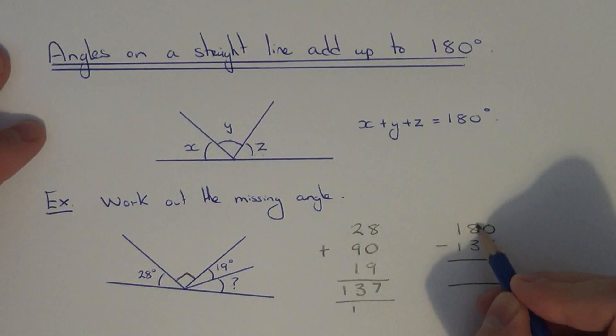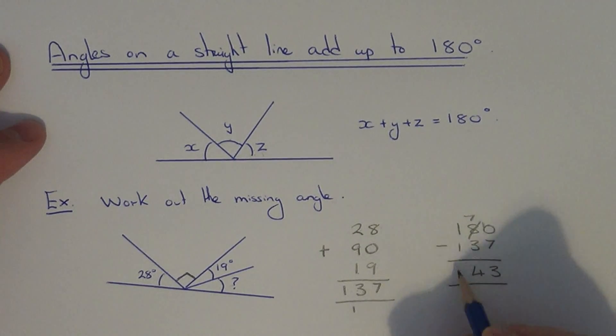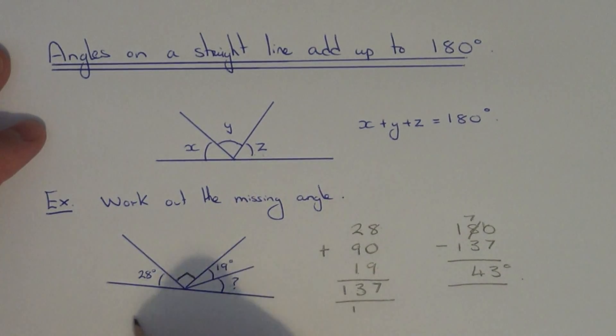0 take away 7 you can't do, so 10 take away 7 is 3, 7 take away 3 is 4, 1 take away 1 is 0. So the missing angle is 43 degrees.